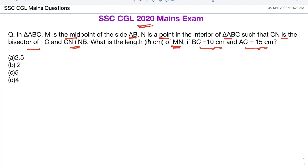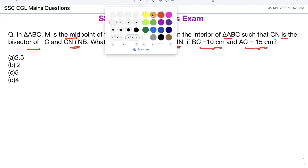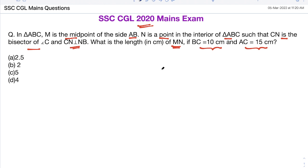These are very easy questions when you draw the diagram carefully, otherwise they may cause confusion. Let me draw triangle ABC with vertices B and C. CN is perpendicular to NB, BC is 10 and AC is 15. M is the midpoint of AB. So what is the length of MN? M is the midpoint, so we need to find the length of MN.